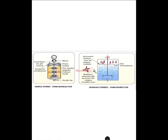The simple stirred tank bioreactor and sparged stirred tank bioreactor — once again these are direct questions. Draw a neat labelled diagram of a simple stirred tank bioreactor, or draw a neat labelled diagram of a sparged stirred tank bioreactor. From Chapter 12, Biotechnology and its Applications: the schematic representation of pro-insulin converted into insulin — once again it is a three-mark question.